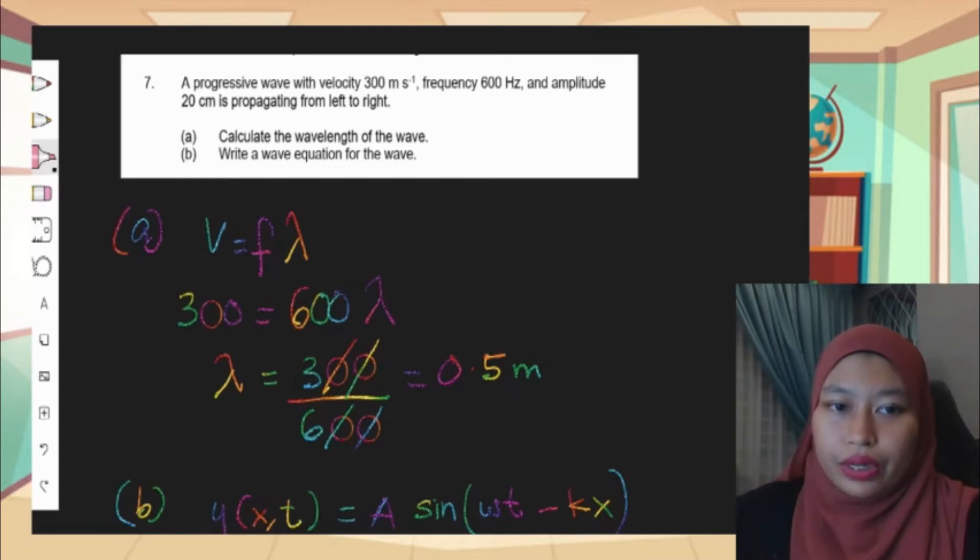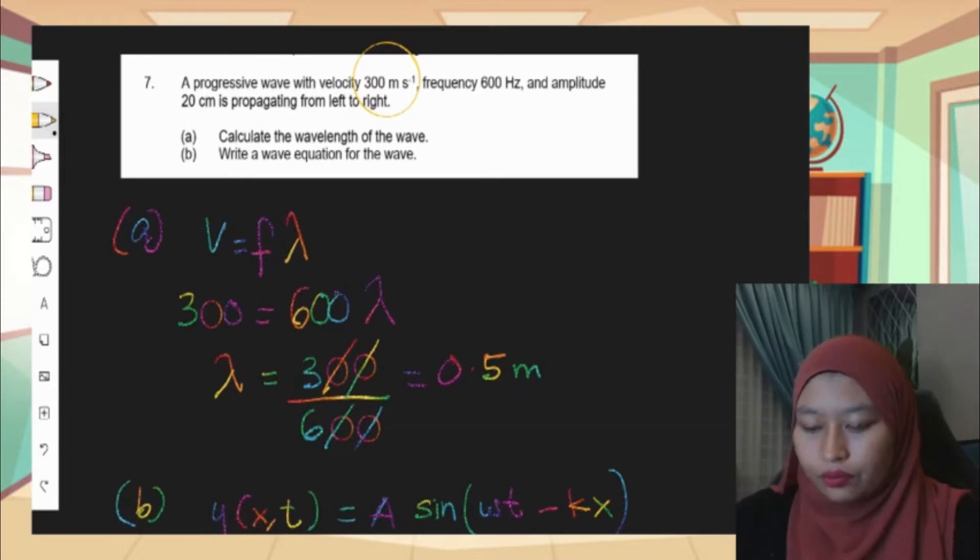For 7a, calculate the wavelength of the wave. The question already gave us the value of velocity, so we know the velocity equation is V equals f lambda. V is 300, f is also given as 600, therefore we will get the lambda or wavelength directly.